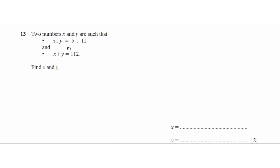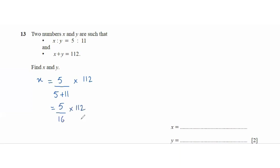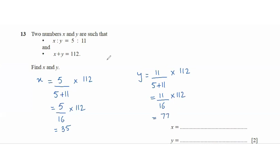Question 13: two numbers x and y such that x:y is 5:11 and x plus y equals 112. Find x and y. For x: 5 over (5 plus 11) times 112, which is 5 over 16 times 112, equals 35. For y: 11 over 16 times 112, which equals 77. Alternatively, once we've found x, y is simply 112 minus 35, which is also 77.